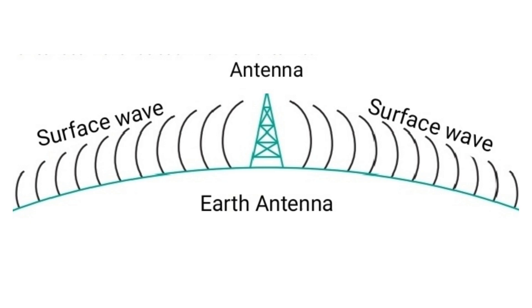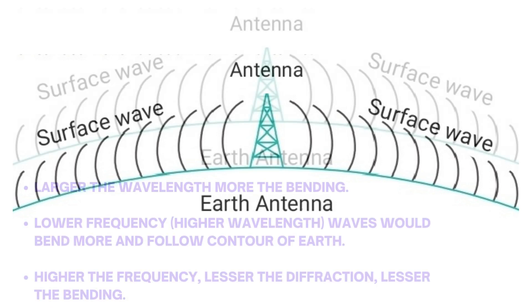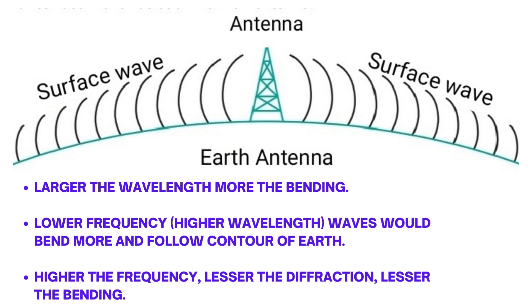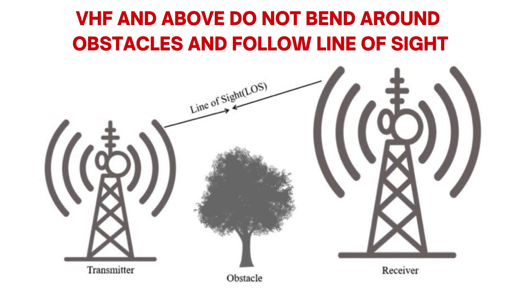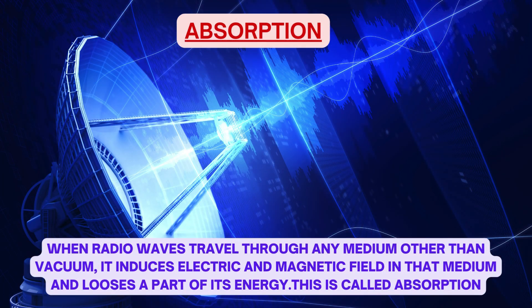Not all waves encounter diffraction equally. Larger the wavelength, more the bending — so lower frequency or higher wavelength waves bend more and follow the contour of the earth. Higher the frequency, lesser the diffraction and bending. So VHF and above do not bend around corners and obstacles and follow line of sight. Absorption: when radio waves travel through any medium other than vacuum, they induce electric and magnetic fields in that medium and lose a part of their energy — this is called absorption.